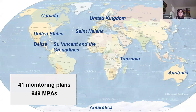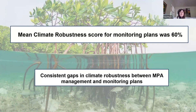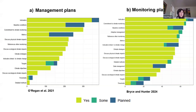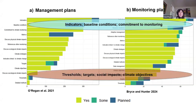With our monitoring plans, we calculated their respective climate robustness scores using the index and explored relationships between certain MPA traits and their CRI score. We found that the mean climate robustness score for monitoring plans was 60%, which was higher than the 39% found in management plans scored by O'Reagan et al. But we found consistent gaps in climate robustness between MPA management and monitoring plans across the 12 robustness questions, which effectively rejected our assumptions around the contents of monitoring plans. This figure lays out the CRI scores for management plans on the left and monitoring plans on the right, with the components of the index on the y-axis and scores on the x-axis.